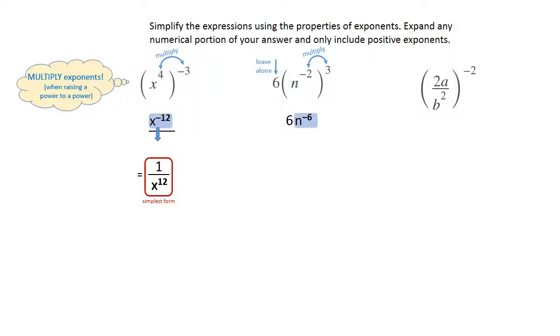The n to the negative 6 is the only thing that has to move because the 6 was just there to begin with. So you're going to draw a fraction bar and move that to the bottom. The 6 stays on top, and the n raised to the 6th power moves to the denominator, and that simplifies the second one.